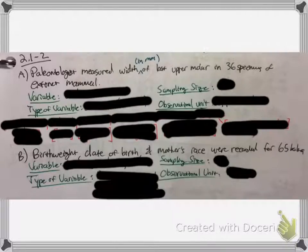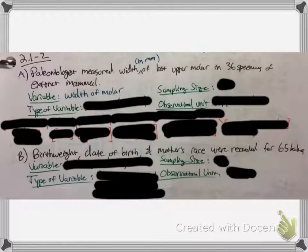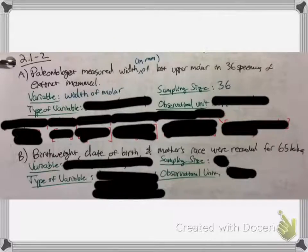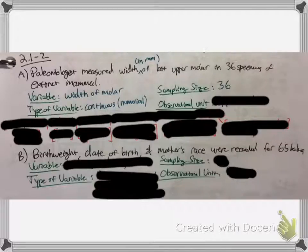So what is the variable? Well, what changes? What's different in each of the 36 specimens? That would be the width of the molar — that's what's changing. You might have 8 millimeters, 6 millimeters; it always changes depending on the individual. What's the sampling size? That's pretty obvious — how many specimens? 36. What's the type of variable? This one has a lot of types it could be, but this one is continuous or numerical — I'll get to that in a minute.